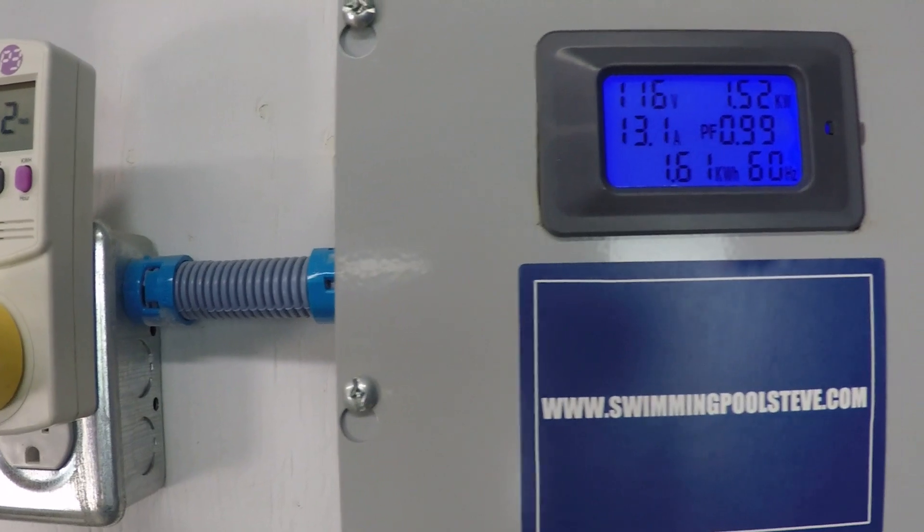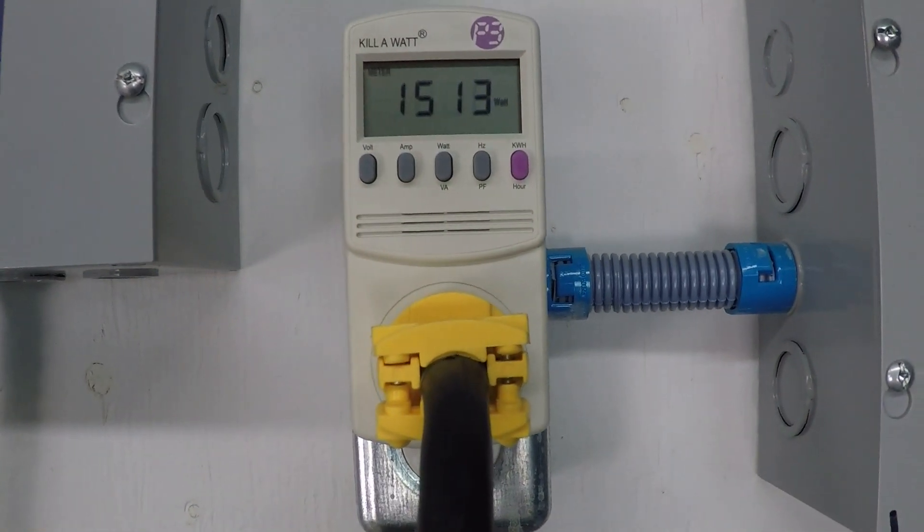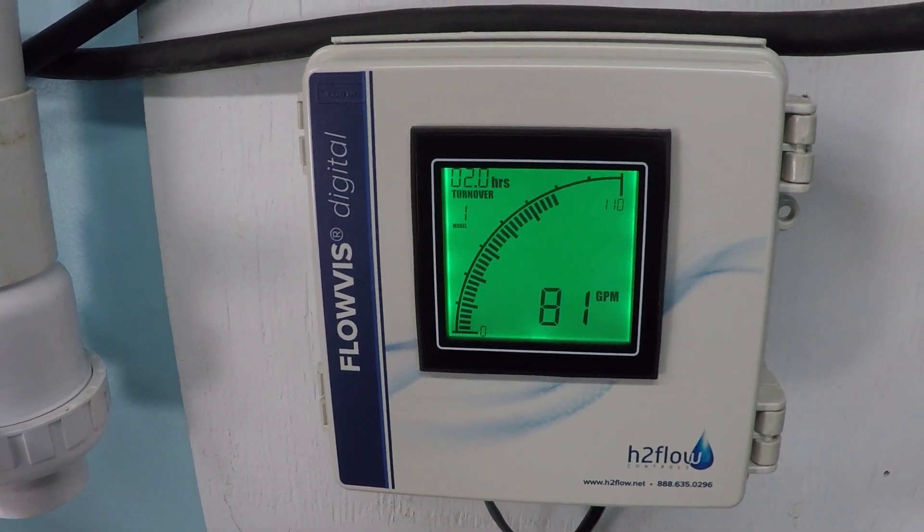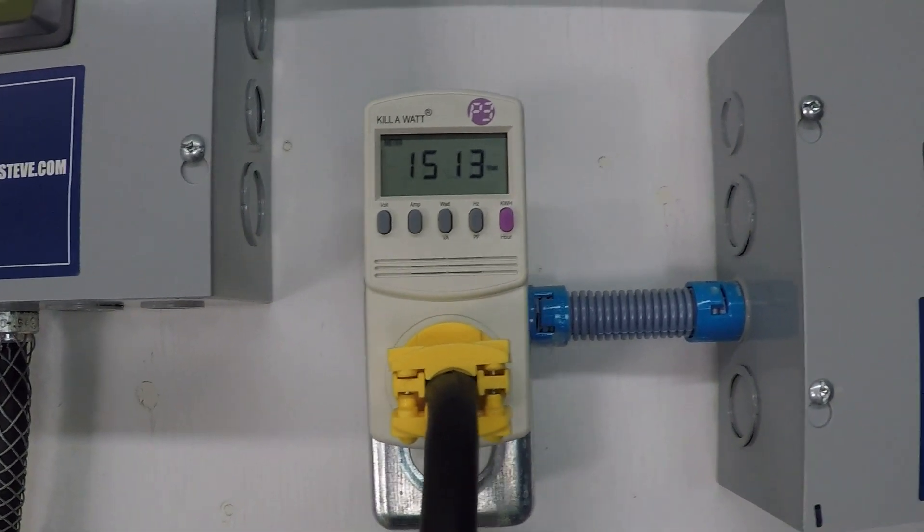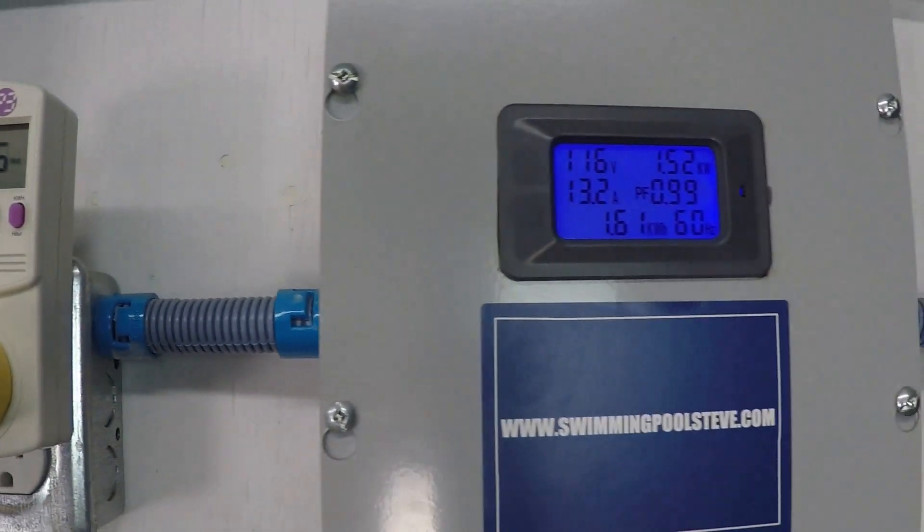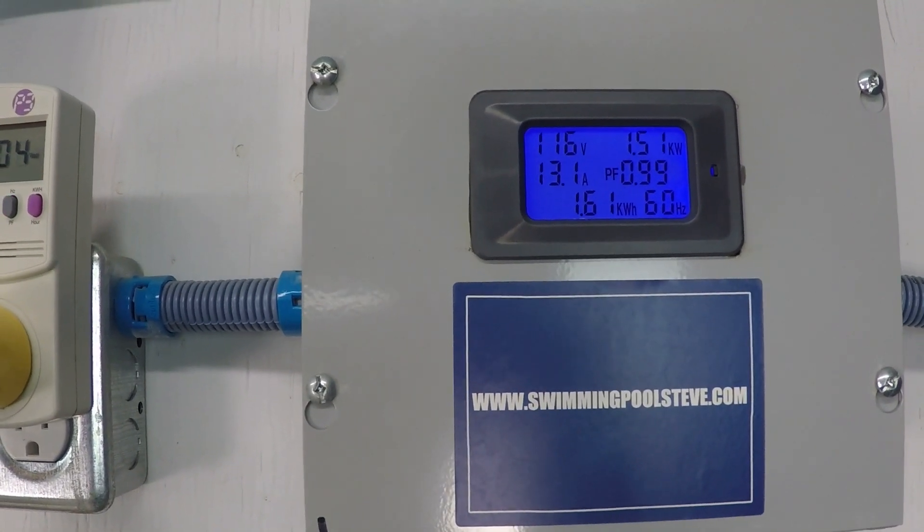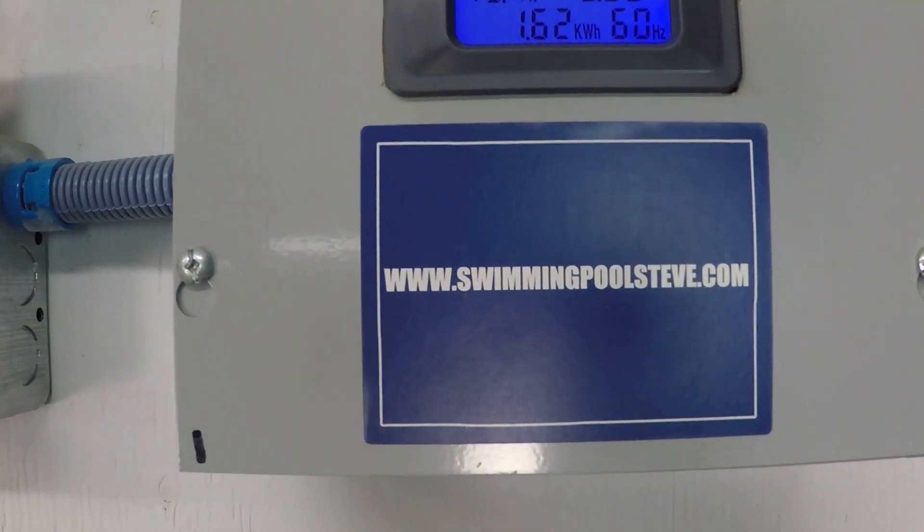Now it's important to recognize with all of these numbers, these are unique to each and every swimming pool. This is just one example of a swimming pool system and some flow rates that you can achieve and what the power consumption looks like at those flow rates. But every pool is different. Your pool will be different than this. But if you found this information helpful, please be sure to like this video and subscribe to my YouTube channel, and you can check out my website Swimmingpoolsteve.com.